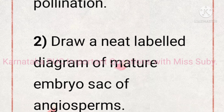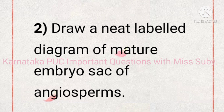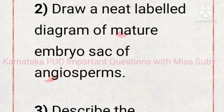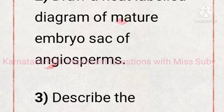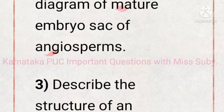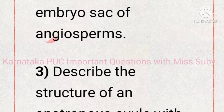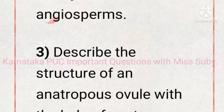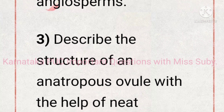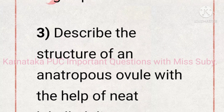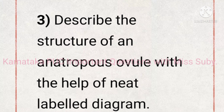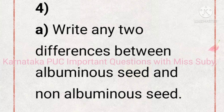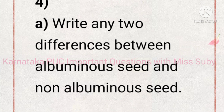The second question is: draw a neat labelled diagram of the mature embryo sac of an angiosperm — this also carries 5 marks. The third important question is: describe the structure of an anatropous ovule with the help of a neat labelled diagram, carrying 5 marks. The fourth question is subdivided into two parts.